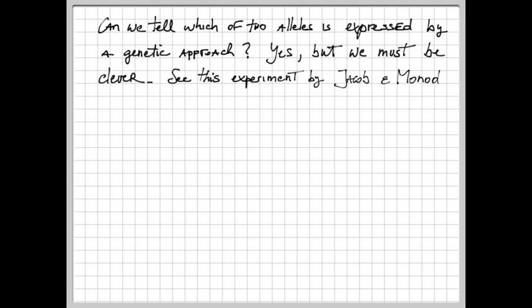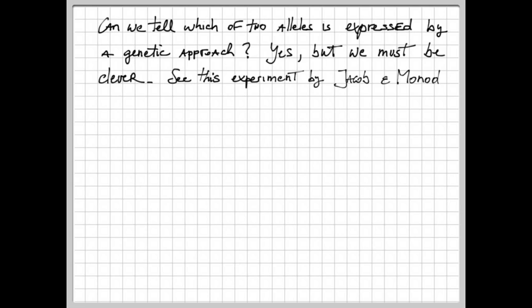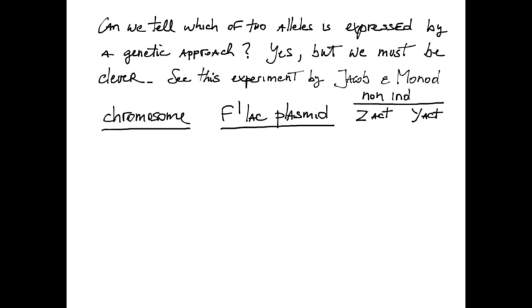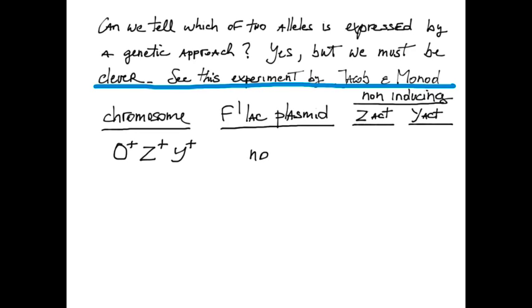They used the lac system and constructed the following strains, some of which were merodiploid. They followed expression of the Z product, beta-gal, and Y product, lac permease, under non-inducing conditions. The simple wild type displays no expression. The OC mutant expressed both Z and Y.